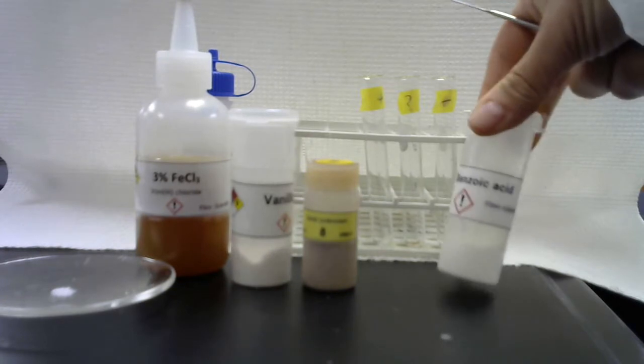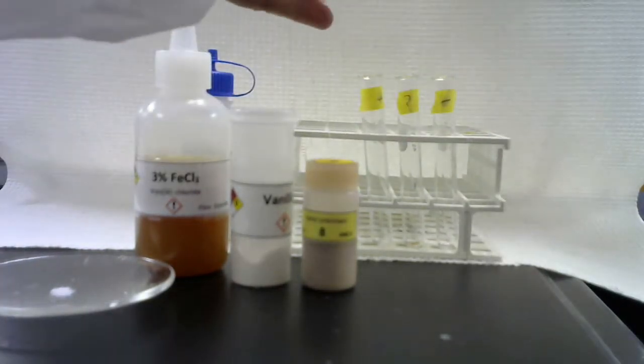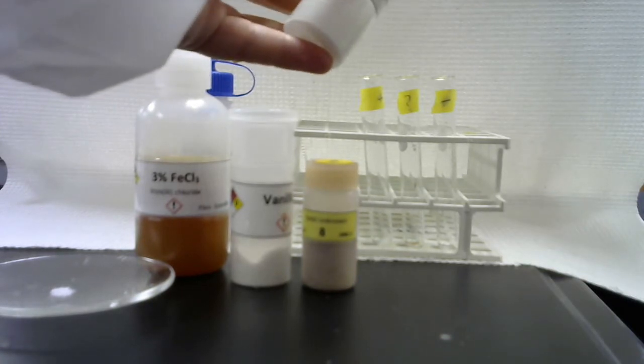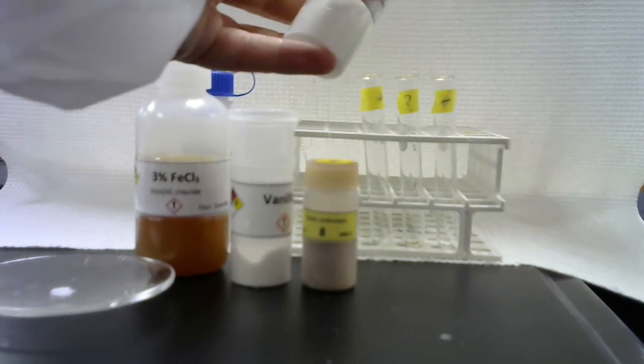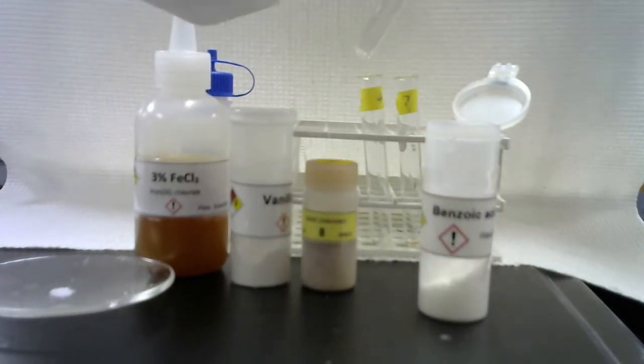And benzoic acid is my known negative. This is not a phenol. And so I'll put about 30 milligrams of benzoic acid in the test tube for the iron 3 chloride test. That's my known negative.